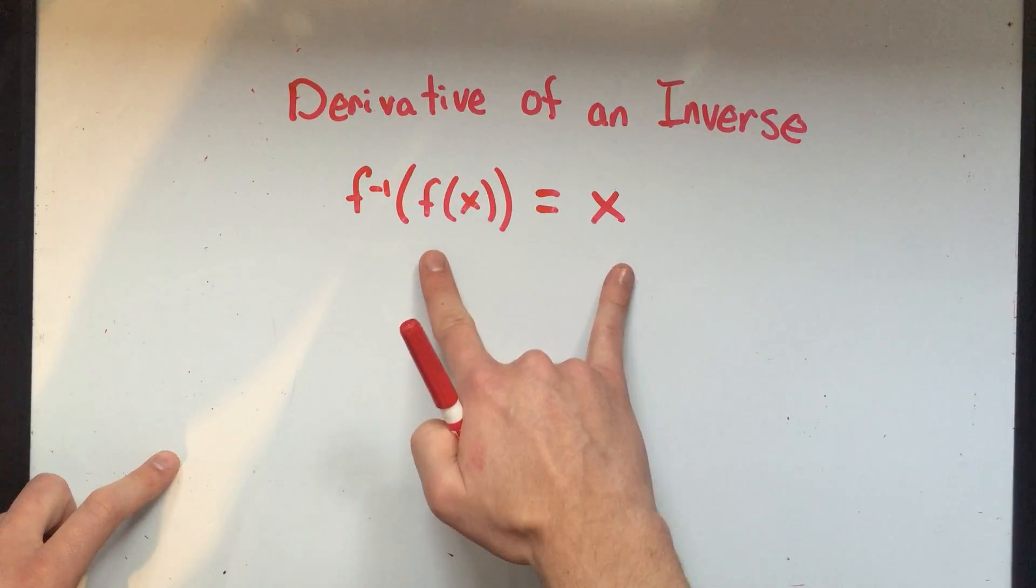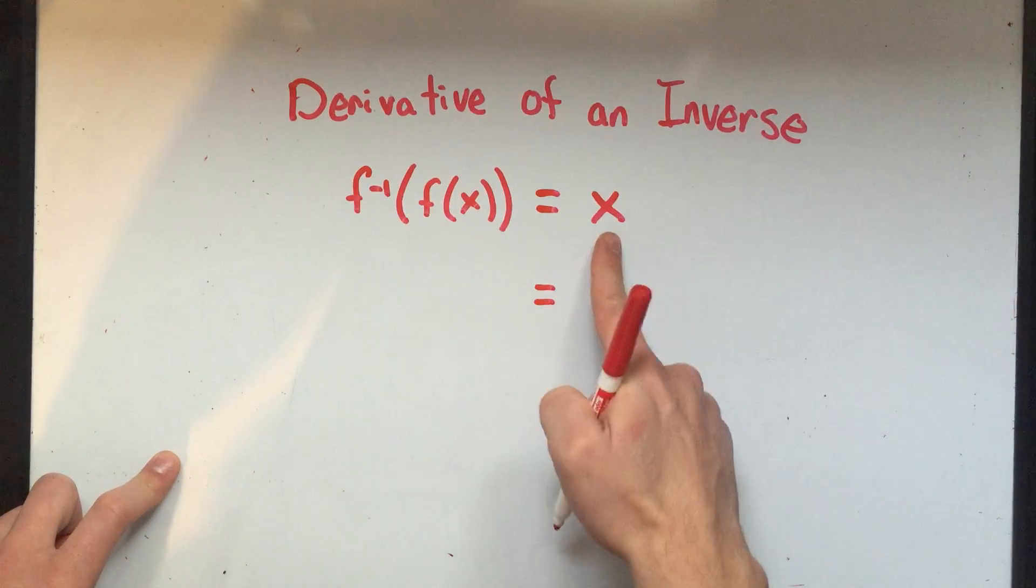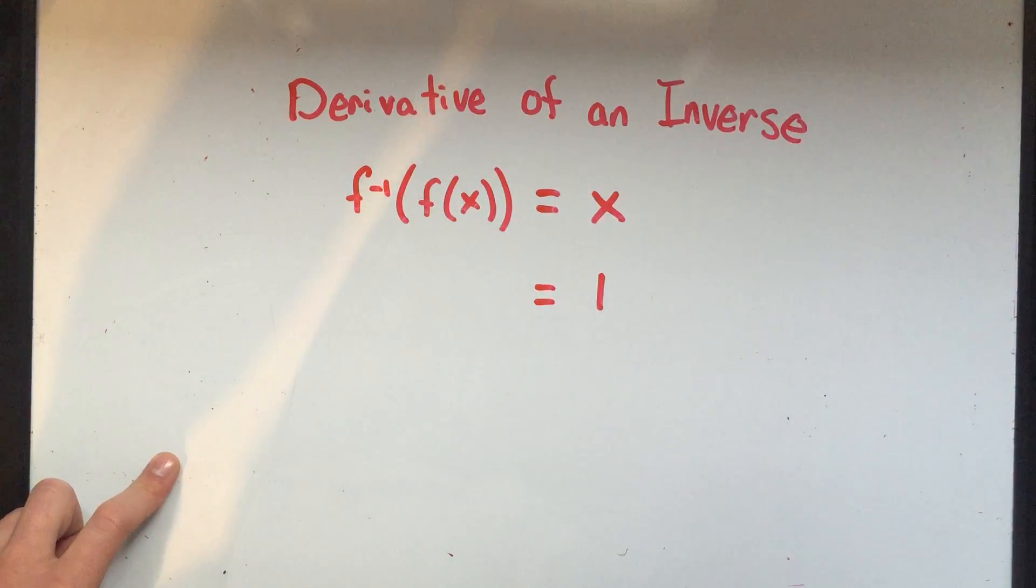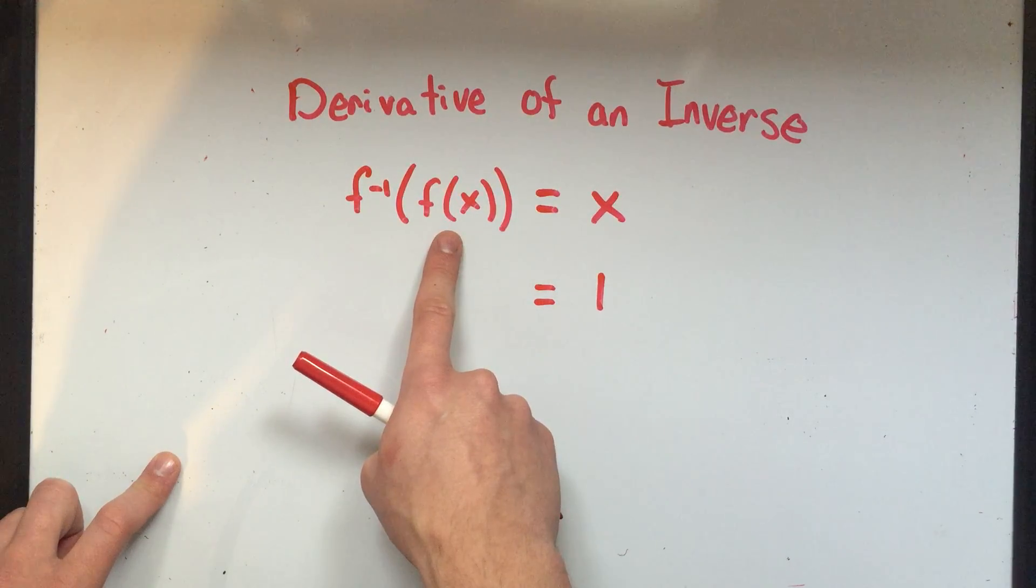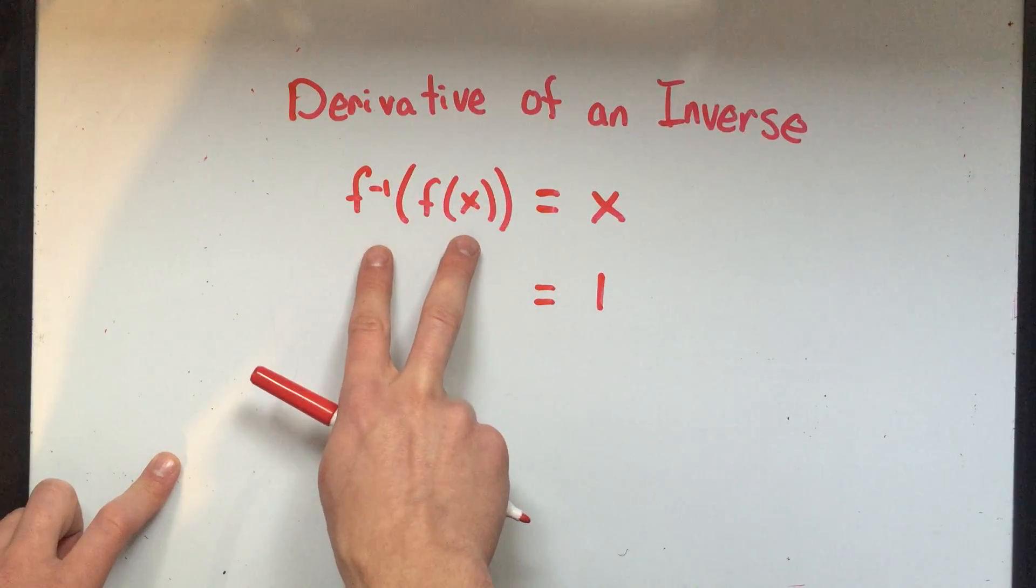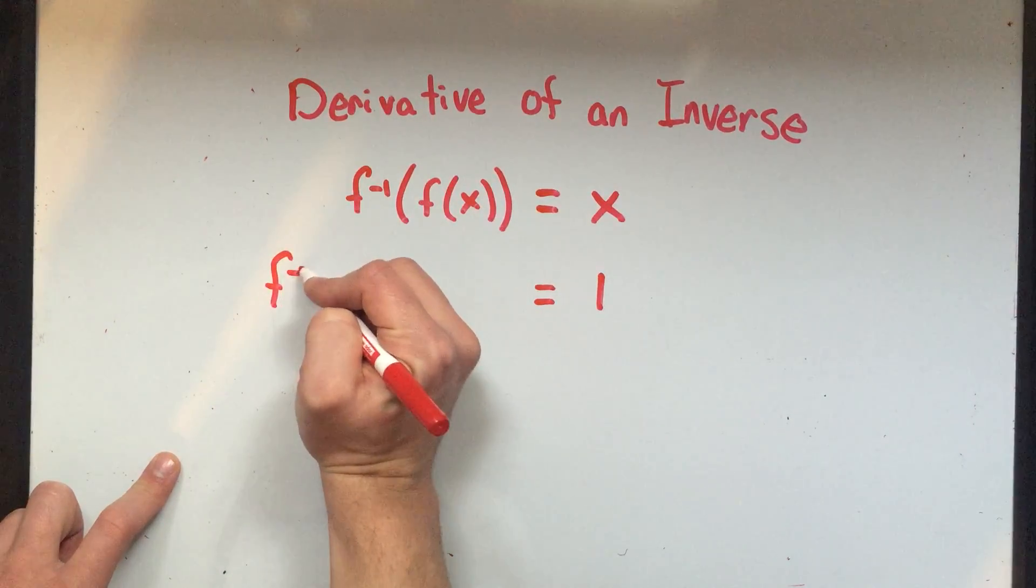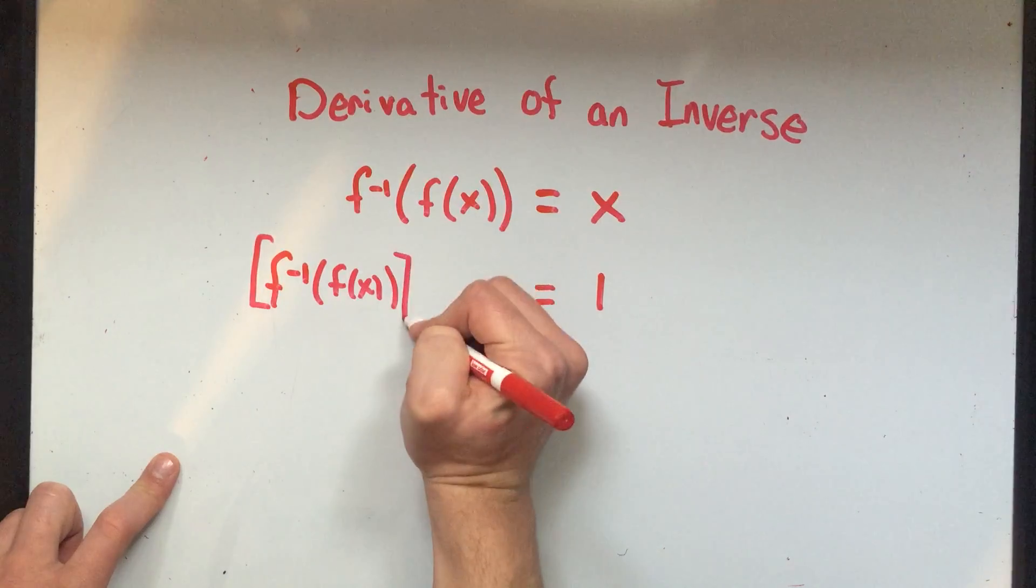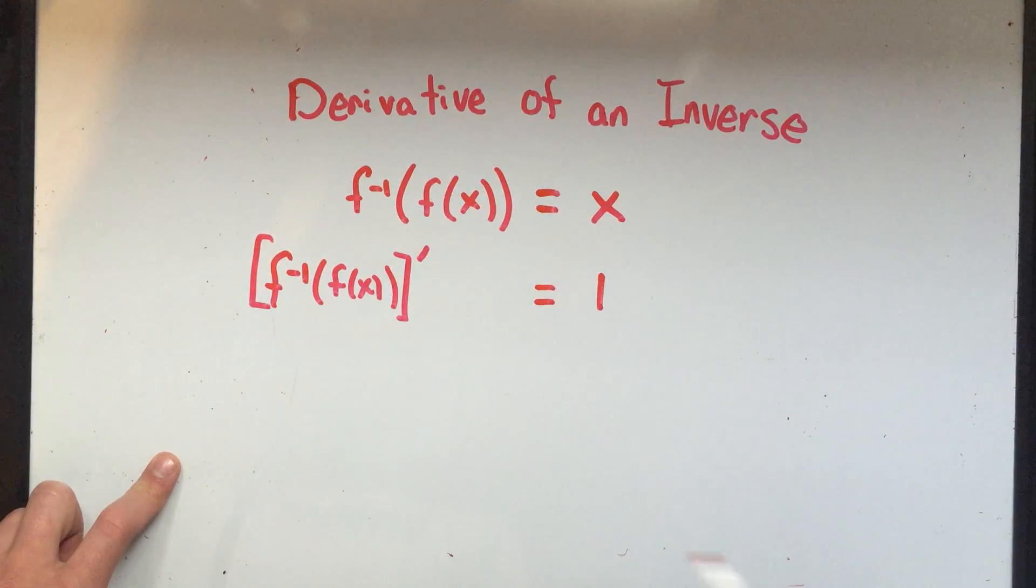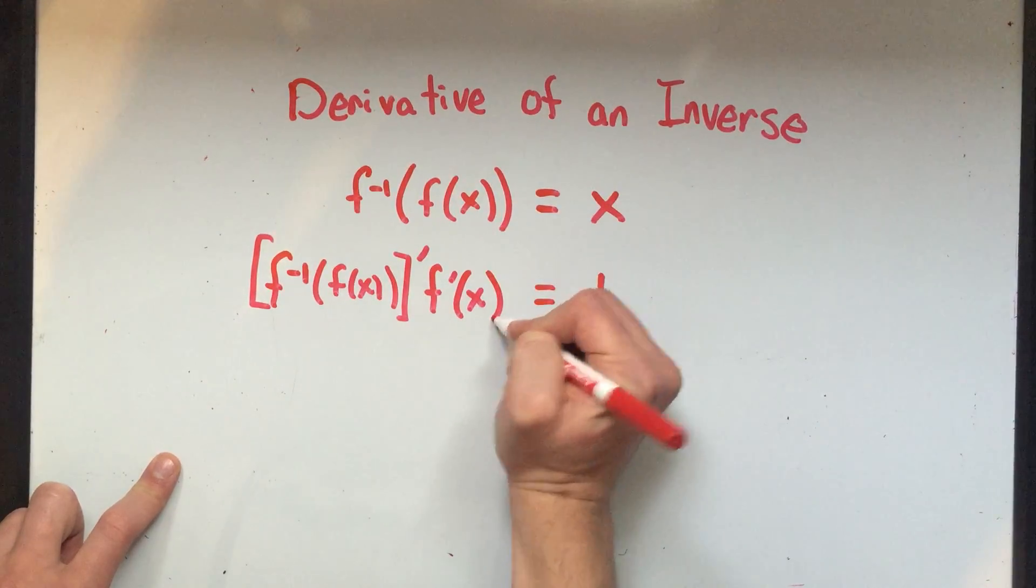What happens if I take the derivative of both sides with respect to x? Well, the right hand side is pretty easy - the derivative of x is 1. This is a little more complicated. This is going to be a chain rule, the derivative of a function composed with another function.